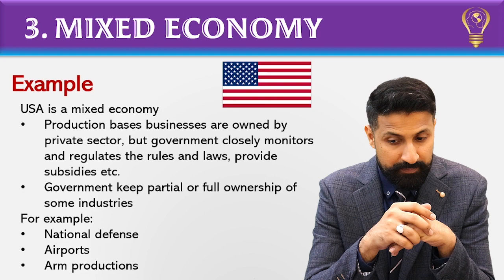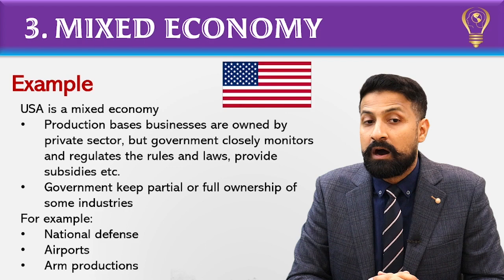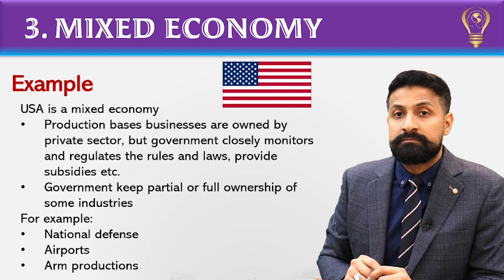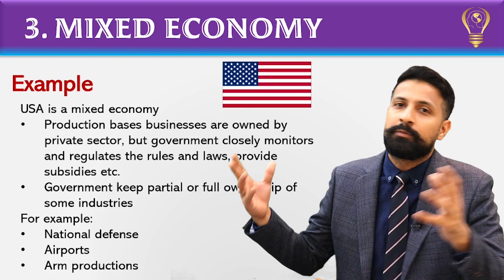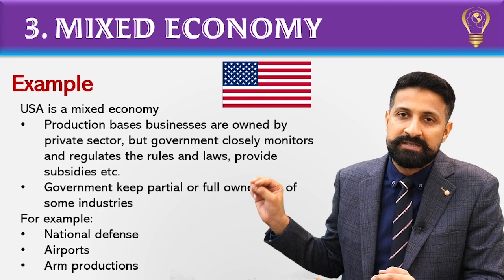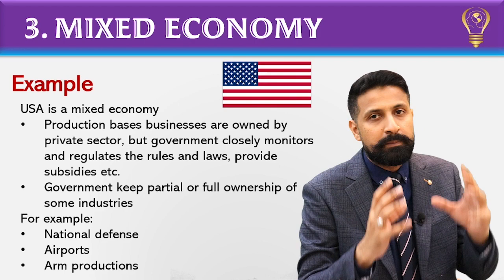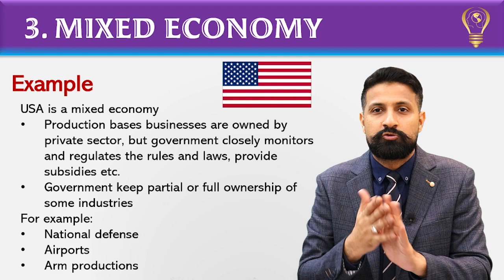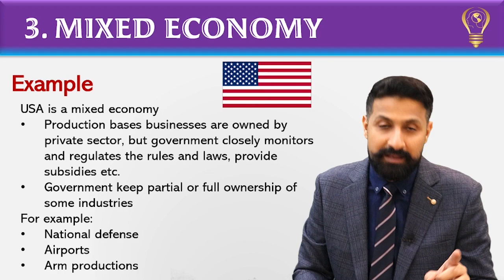Some industries are either partially or fully under government ownership. For example, the national defense sector, airports, and arms production. In the USA, all weapons manufactured will be in government-owned factories — no private individual can manufacture arms. As for former President Donald Trump, he built the wall on the Mexican border partly because of complaints about weapons being brought in from outside.